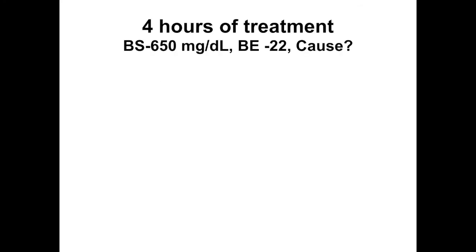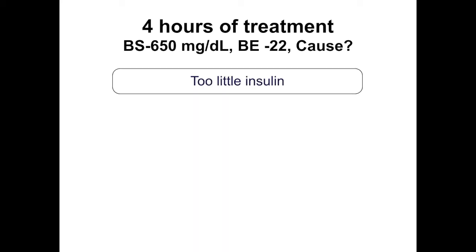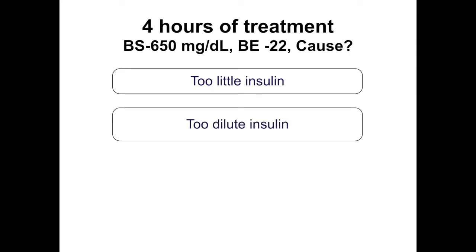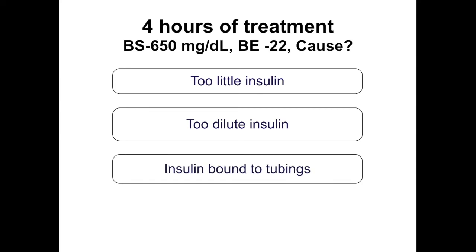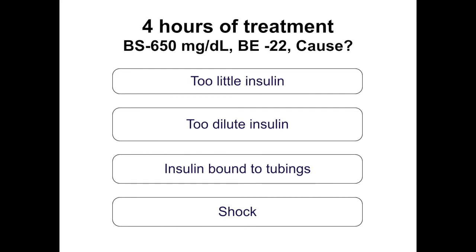At 4 hours, insulin is started but blood sugar remains high and base excess persists. Lack of response may be because the insulin dose is too low — recalculate. Best practice is to prepare 50 units in 50 ml normal saline and give at 0.1 unit/kg/hour by weight. The solution may be too dilute if using a burette set. Insulin may also be bound to tubing — flush 10-15 ml. If the child is in refractory shock, response may be limited.